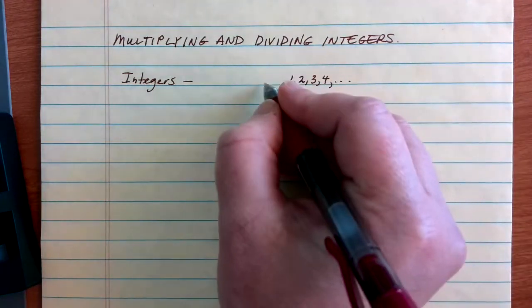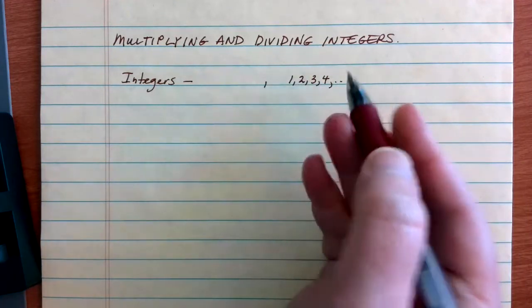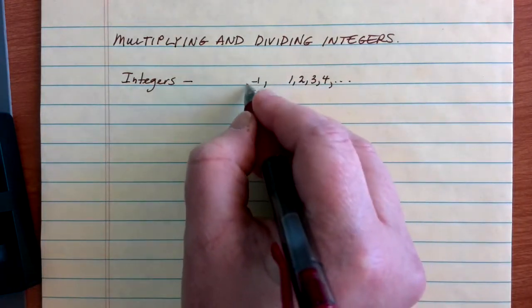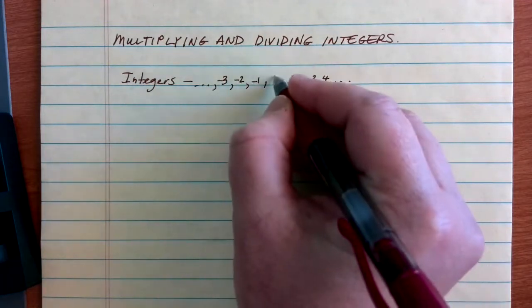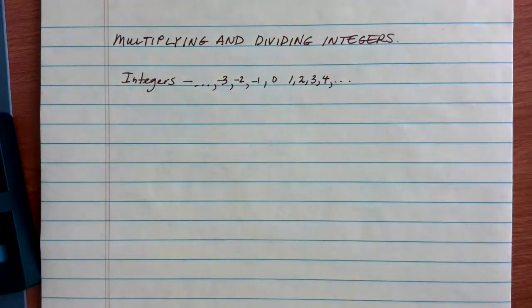And all of their negative values. So, things like negative 1, negative 2, negative 3, and so on that way. And of course, our nice central value of 0 there.